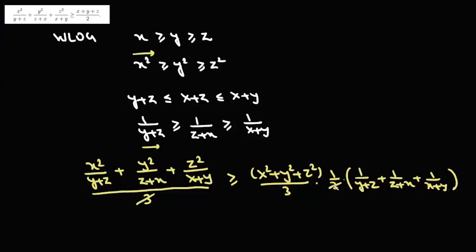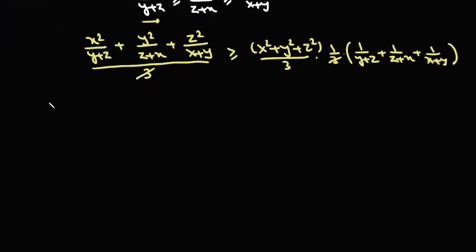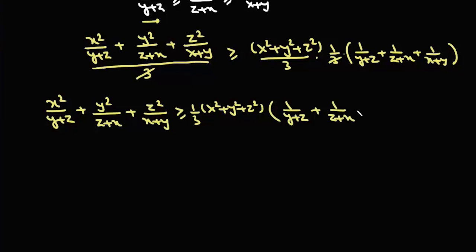The 3 and 3 cancel. From here we can write: x squared upon y plus z, plus y squared upon z plus x, plus z squared upon x plus y, is greater than or equal to x squared plus y squared plus z squared, times 1 by 3, times 1 upon y plus z plus 1 upon z plus x plus 1 upon x plus y.